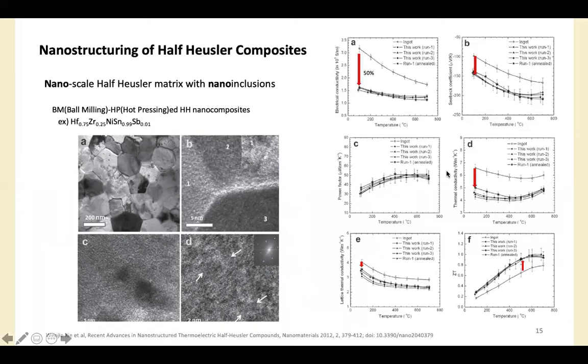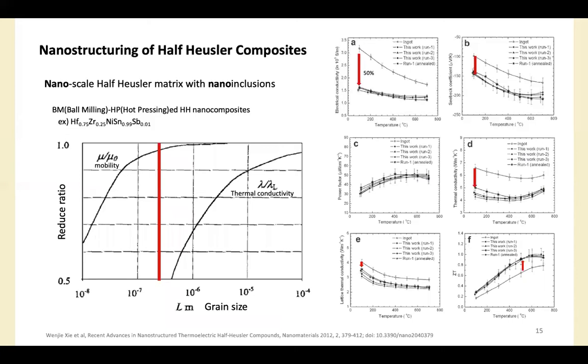However, electrical conductivity of nanocomposites is significantly lower than ingot material at room temperature because small grain and lattice distortions also scatter the charge carriers and influence lowering electron mobility. To overcome this problem, the appropriate grain size of half-Heusler matrix was studied. And the best performance was shown around 200 nanometers. Because if the size is smaller than 200 nanometers, the scattering of electrons will be dominant due to the reduced mobility of electrons.